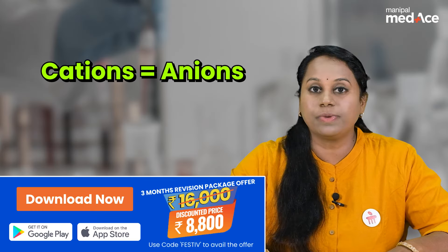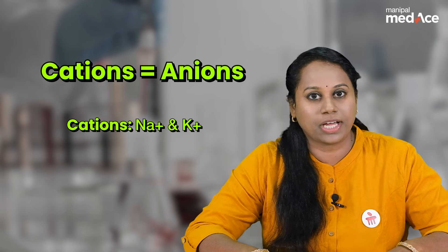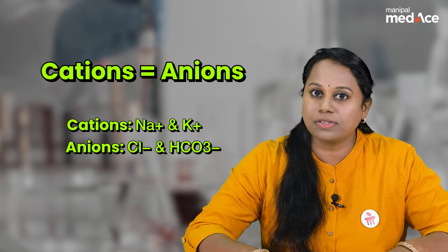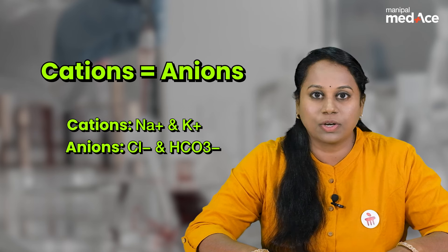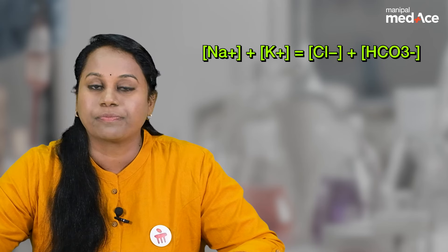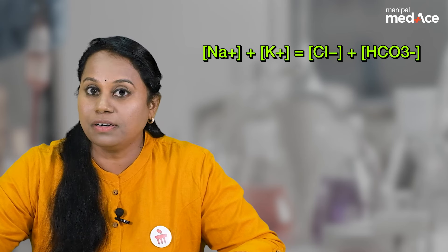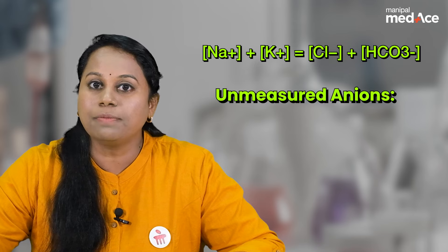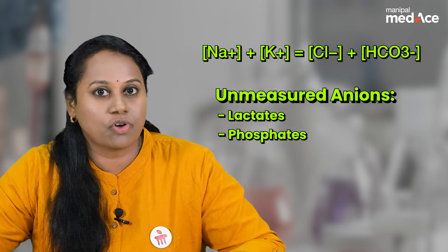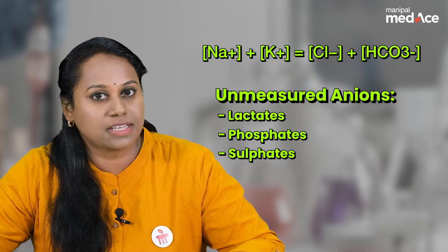What are the major measurable cations? Sodium and potassium. What are the major measurable anions? Chloride and bicarbonate. So, sodium plus potassium must be equal to chloride plus bicarbonate. But remember, we also have some unmeasurable anions like lactates, phosphates and sulfates.